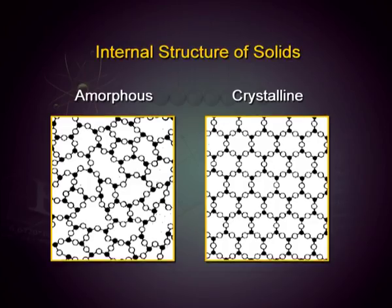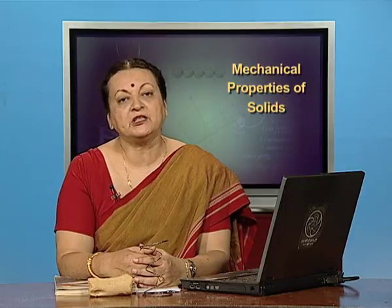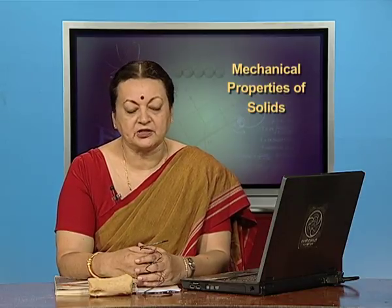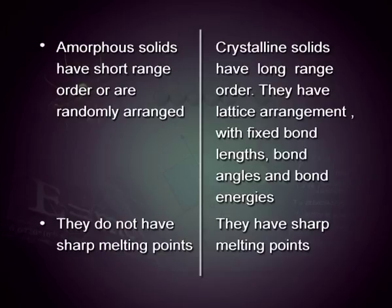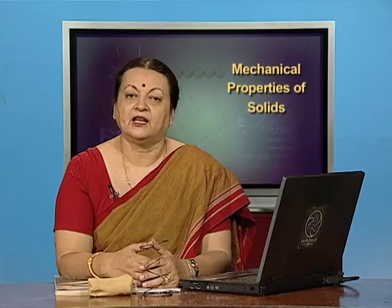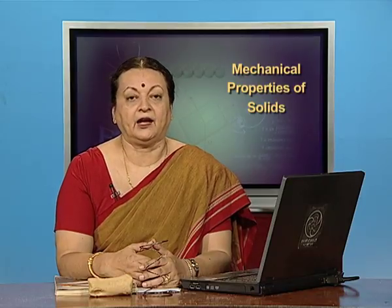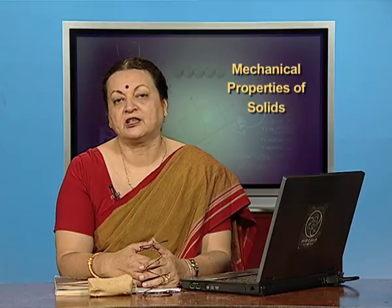Solids can be classified into two classes: amorphous and crystalline. Amorphous is when the solid molecules and atoms are arranged in a short range order — that means in the bulk material they do not have a patterned arrangement. So much so that they do not have a sharp melting point and they are not rigid. Their properties are isotropic, which means refractive index and thermal conductivity would come out to be the same whichever way you measure it. When you break them, they are not going to break with regular edges and therefore they have special conditioned properties.